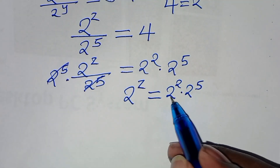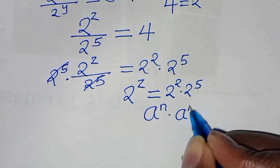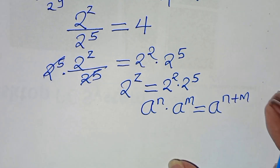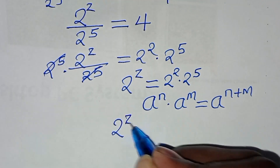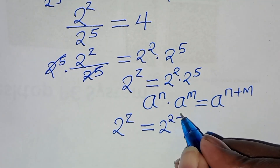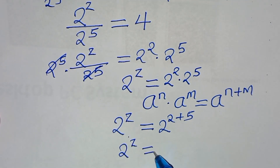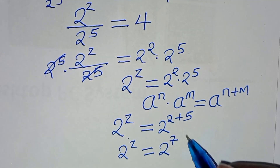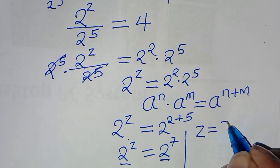Now 2 to the power of 2 times 2 to the power of 5 is in the form a^n times a^m, which equals a to the power of n plus m. Applying this exponent property, 2 to the power of z equals 2 to the power of 2 plus 5, which equals 2 to the power of 7. Since the bases are common, z equals 7.